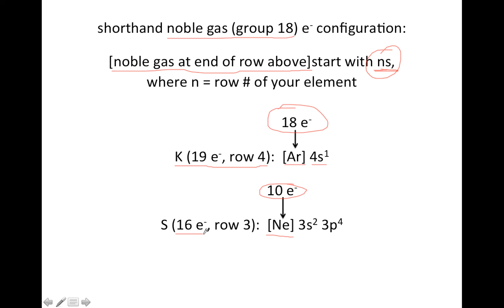I know I have 16 total, so I need to fill in 6 more after that. So since I'm in row 3 for sulfur, I'm going to start with 3s and go from there. So the 3s fits 2 electrons, and then I still have 4 more to go, so I put those in 3p. So there is a shorthand way to do it that saves you some time, and is pretty much all you need to know for a lot of the purposes we'd use later on.